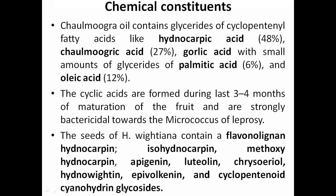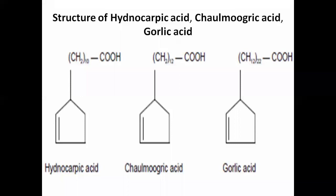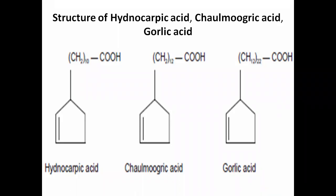Additional constituents include cyclopentenoids and cyanohydrin glycosides. These are the different contents found in the seeds and oil which you should remember. The primary ones are hydnocarpic acid, chalmogric acid, and gorlic acid. Their structures feature a 5-membered ring with a double bond attached to a carboxylic acid chain. The number of CH2 groups in the chain — 10, 12, and 22 respectively — changes across these three acids, but the core structure is simple. You should draw all three structures in your answers.